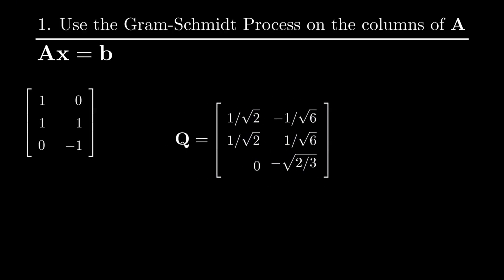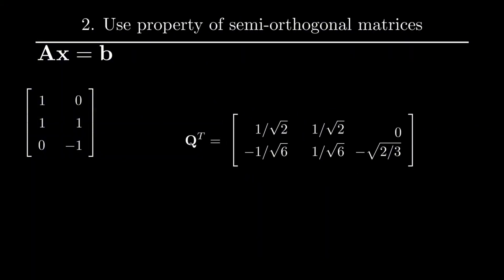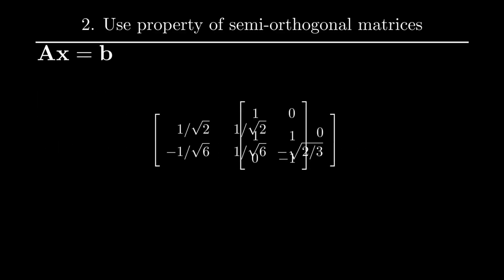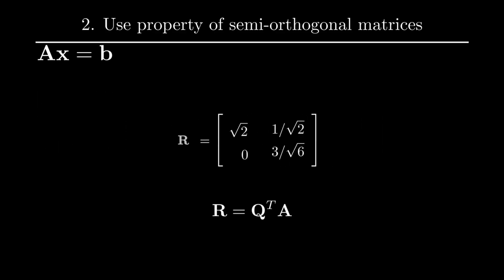Now we have found our Q matrix. To find the R matrix, we will transpose Q and multiply it by A. This gives us the following matrix. With that, we have successfully found the QR factorization of our A matrix.